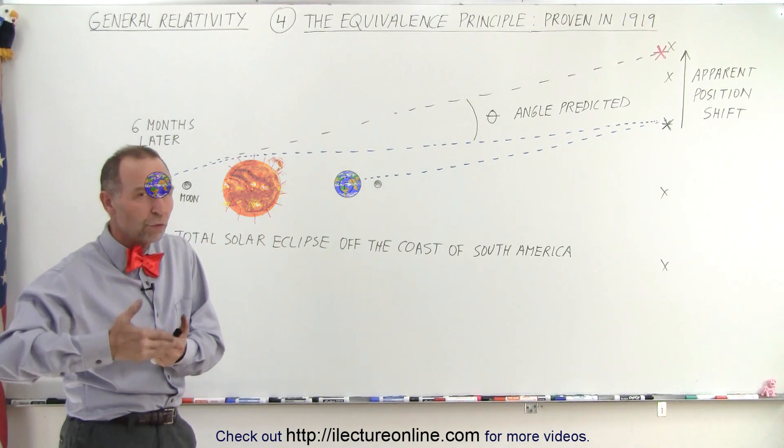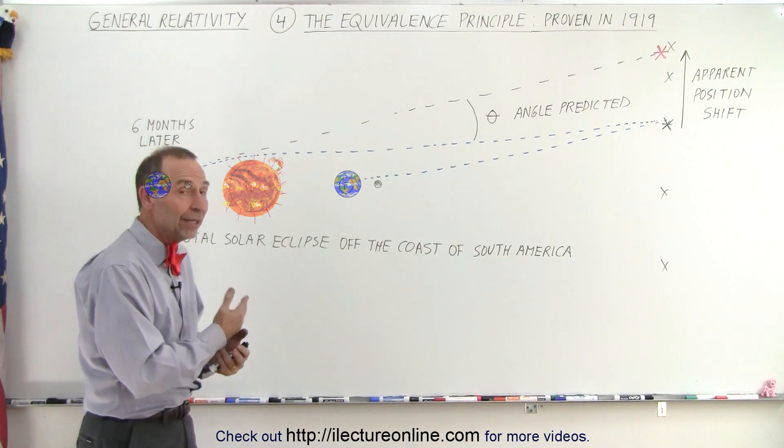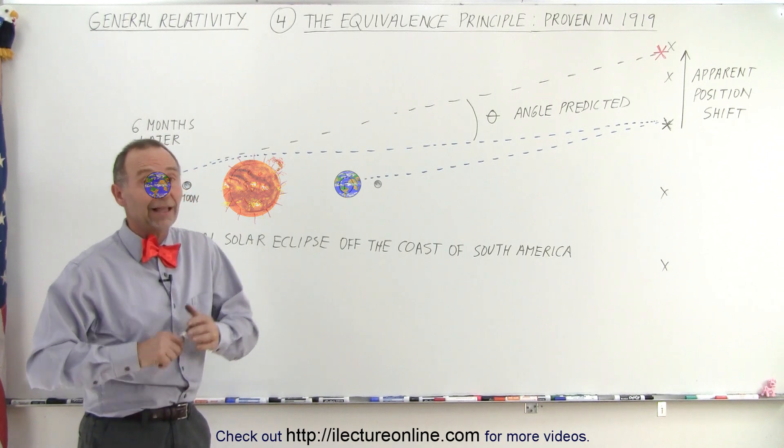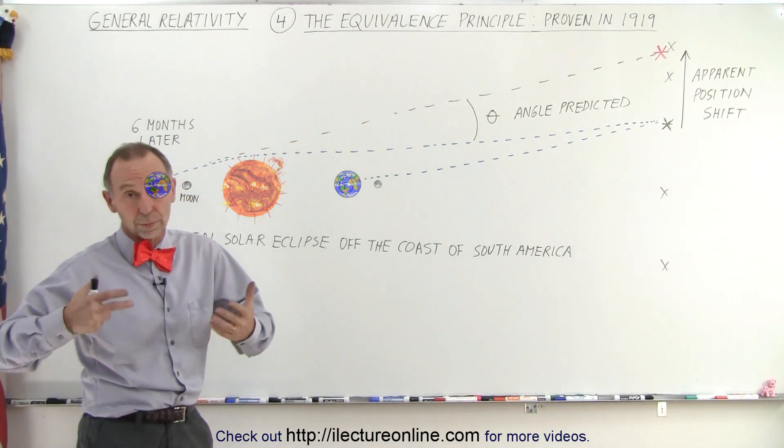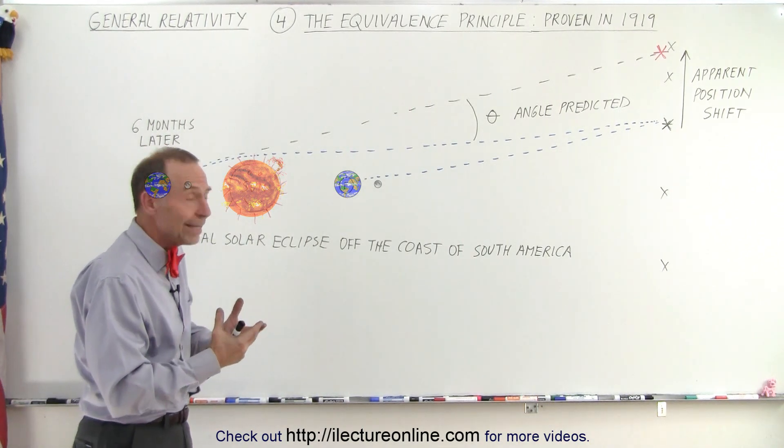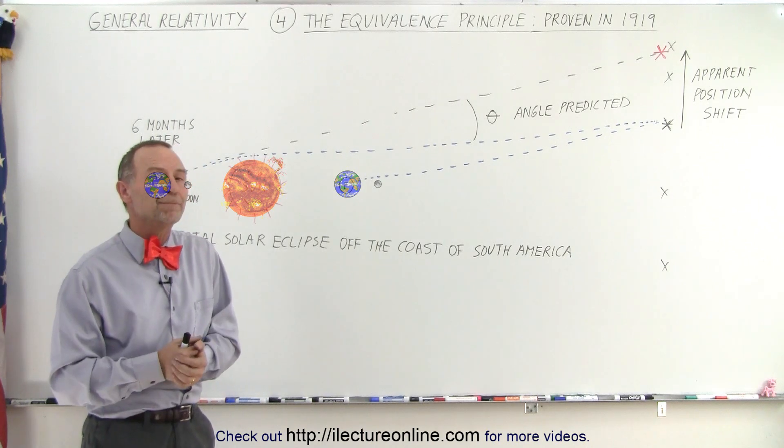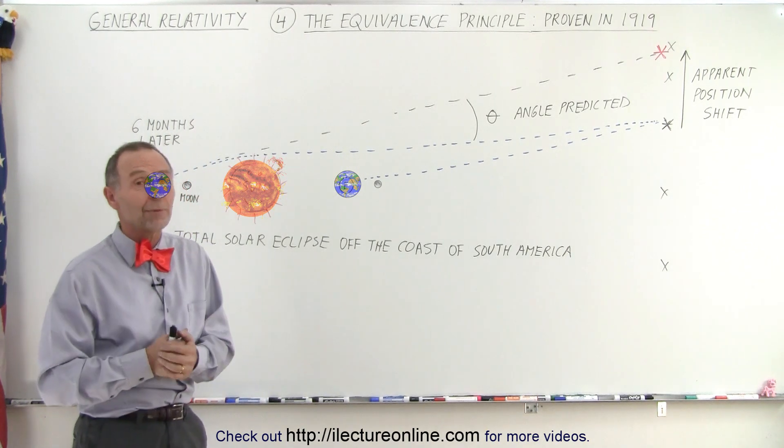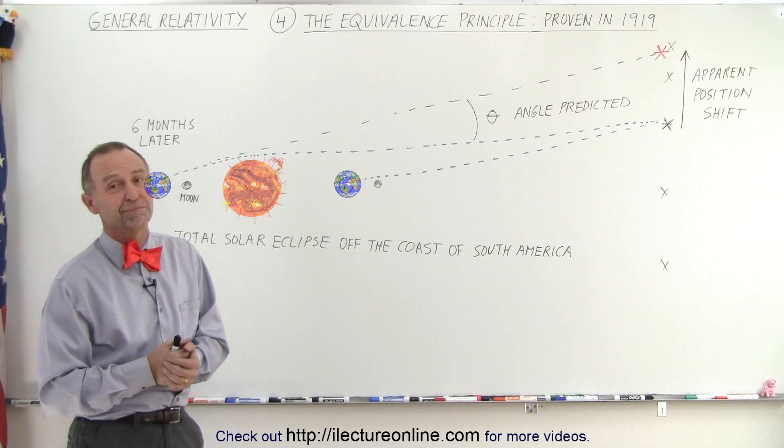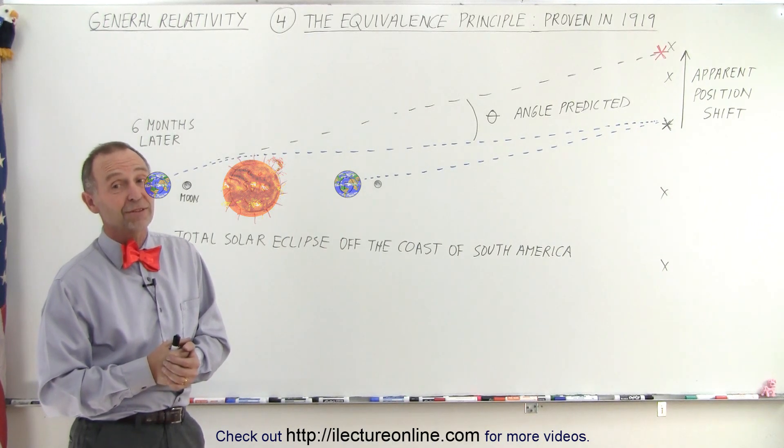And so you'll see that there's all kinds of effects that we can actually measure and see. Again, proving over and over again that this theory is absolutely correct. And that space is indeed curved or warped, causing the effect of gravity. It's an amazing discovery. And this is how we proved it. Pretty amazing.